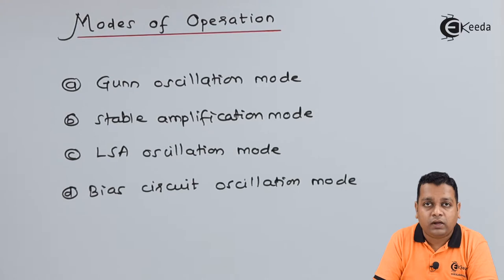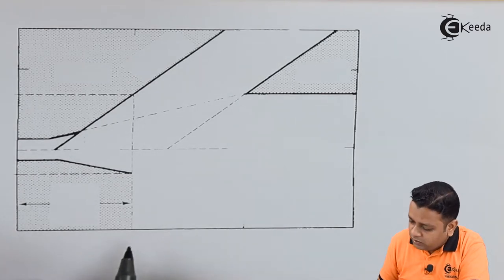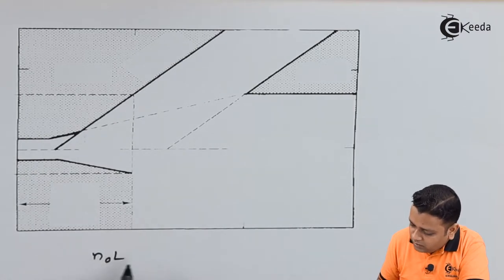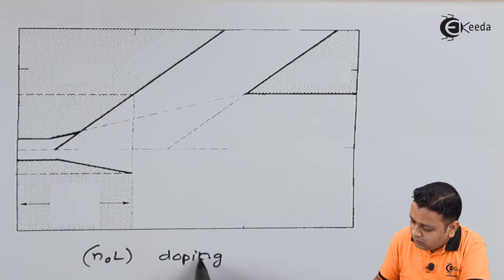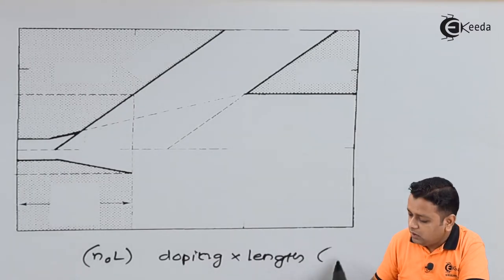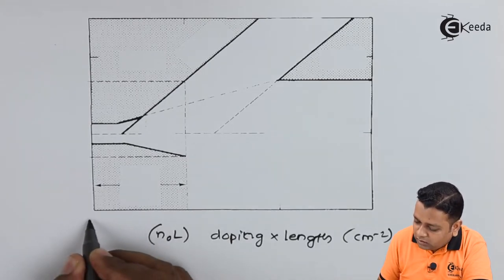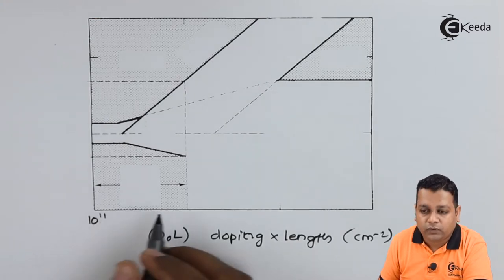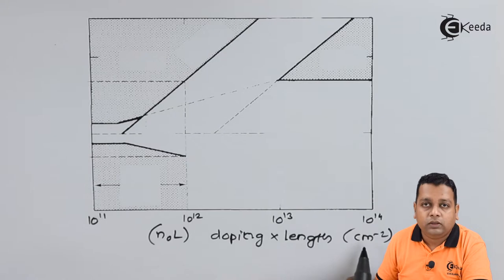These four modes are summarized with the help of one diagram. On the horizontal axis we take the product n₀·L, where n₀ represents the doping level and L denotes the length, measured in per centimeter squared. The markings taken are 10¹¹, 10¹², 10¹³, and 10¹⁴ per centimeter squared.